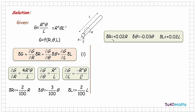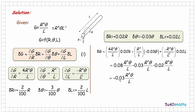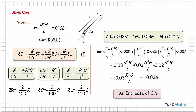Taking these values for the small changes and the expressions for the partial derivatives, and substituting them into the equation for the overall change in the modulus of rigidity, then multiplying out and adding up the terms, we get that the overall approximate change in g is 0.03 × r⁴θ / l. But r⁴θ / l is in fact g, so the overall change is +0.03g, which represents an increase of 3%.